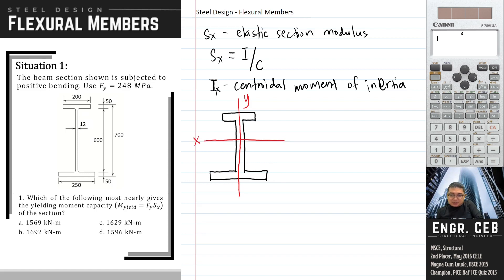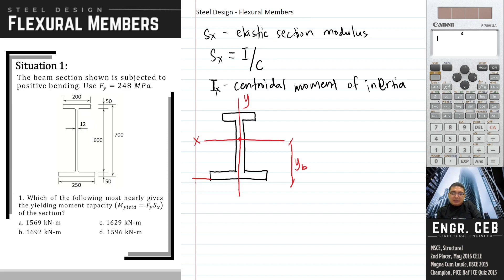Let's say the centroid is at a distance of y_b from the bottom. In order to locate the centroid, we sum moments about a certain reference line. It is easier to assume that the bottom of the section is our reference line, so we make this our reference line.